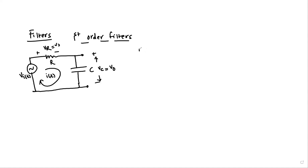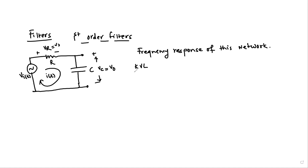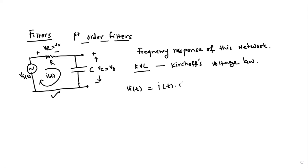What we need to do here is obtain the frequency response of this network. To do so, we will apply KVL — Kirchhoff's Voltage Law — to this network. So we can write: Vi(t) equals I(t) times R plus I(t) times 1 over jωC.